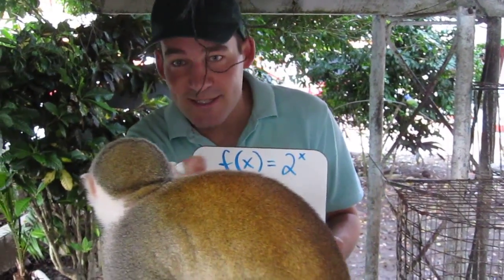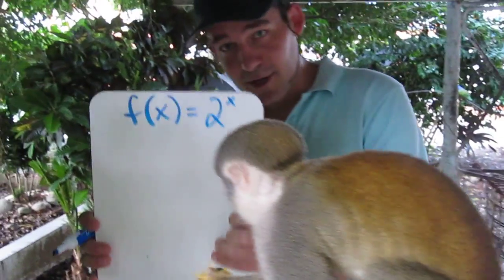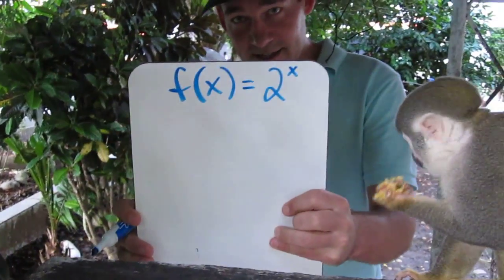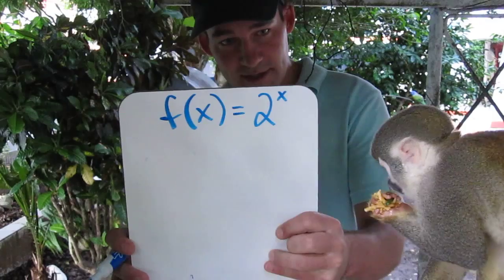Hi, I'm Kendall Rober, and this is a monkey. Today we're going to look at this function: f of x equals 2 to the x power.